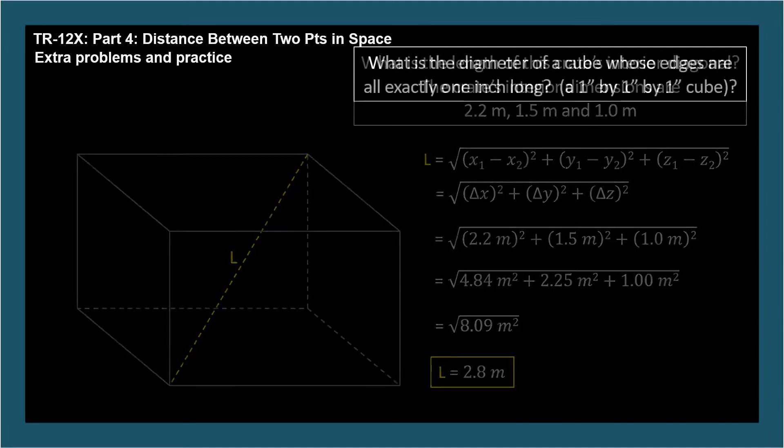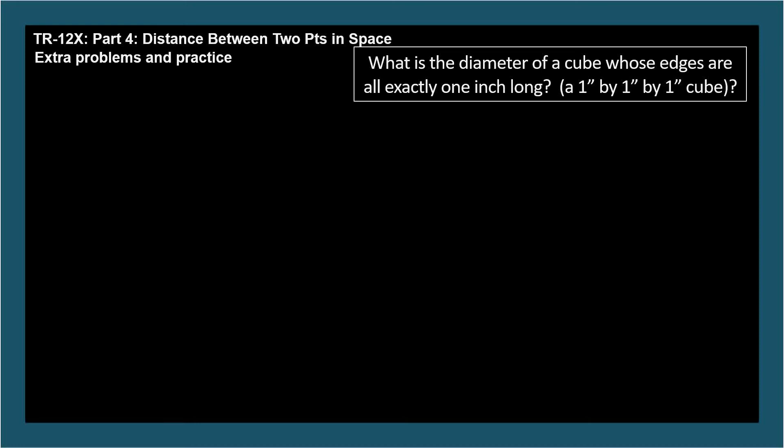Here's one to try in your head. What's the diameter of a cube whose edges are all exactly 1 inch long? That is, a 1 inch by 1 inch by 1 inch cube. The answer is square root of 3 inches.